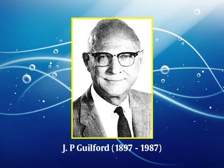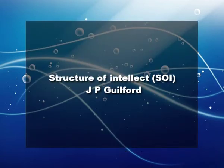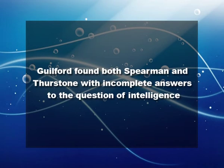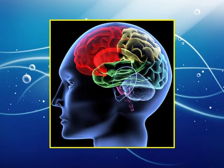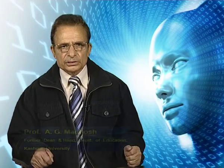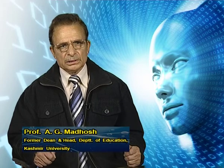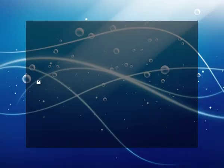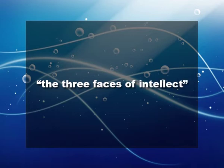Now we turn to another theory proposed by J.P. Guilford, titled the Structure of Intellect (SOI). Guilford found both Spearman and Thurstone to have given incomplete answers to the question of intelligence. He thought that intelligence was made up of a series of distinctly different modes of thought. After thoroughly examining and testing diverse positions, he arrived at a system that grouped similar modes of thought into appropriate categories. The famous phrase, the three faces of intellect, suggests that intellectual functioning can be separated into three different compartments.